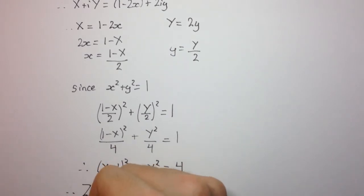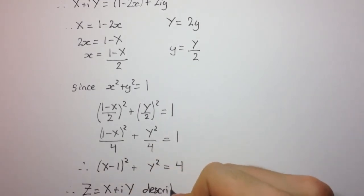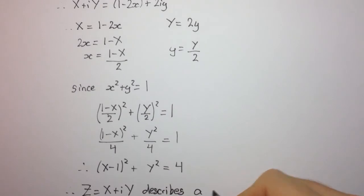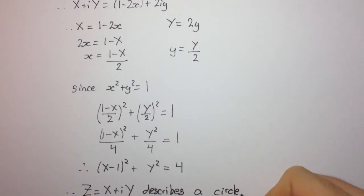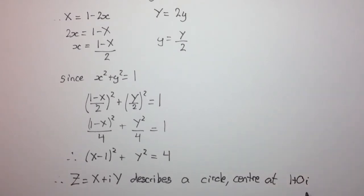And so therefore, capital Z, which equals capital X plus i capital Y, describes a circle with center at 1 comma 0, or 1 plus 0i in terms of a complex number.